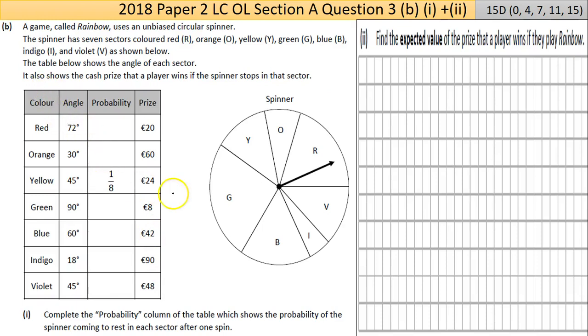Now question 3B here. Parts 1 and 2 are also marked together. This is a 15-marker. So if you can get this table filled in correctly, you're going to get the 11 marks. The second part here is very tricky and can put people off. We'll go to the first bit here. A game called Rainbow uses an unbiased circular spinner. So it's not heavier on one side or whatever. The probability should be as the angles are.